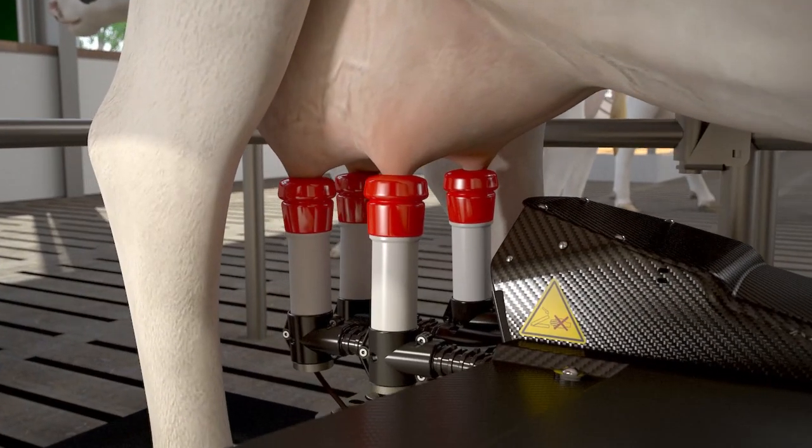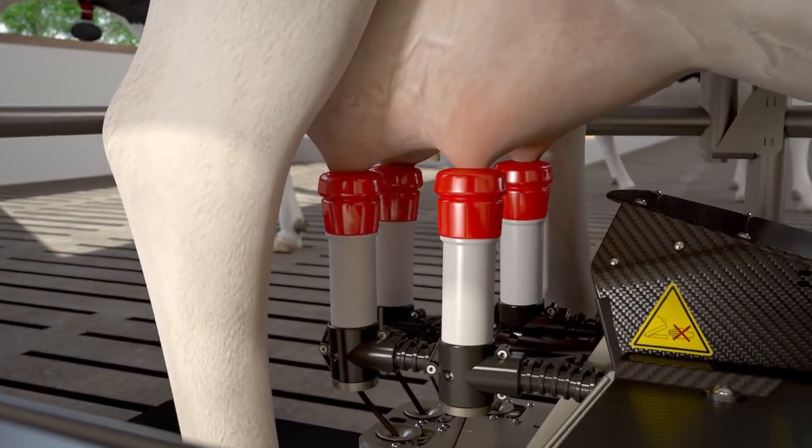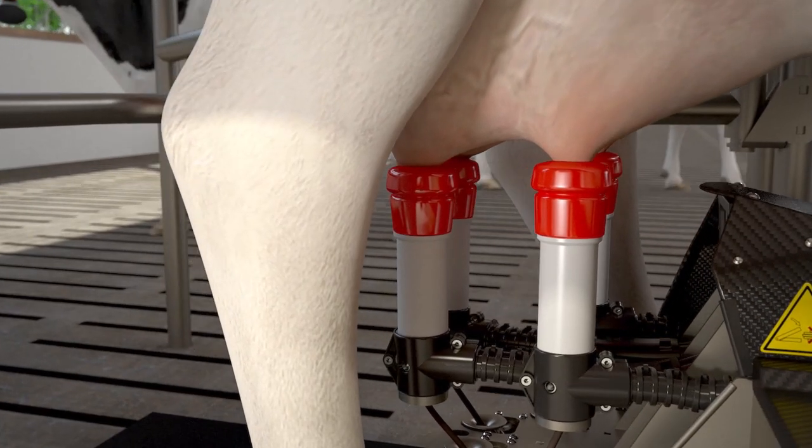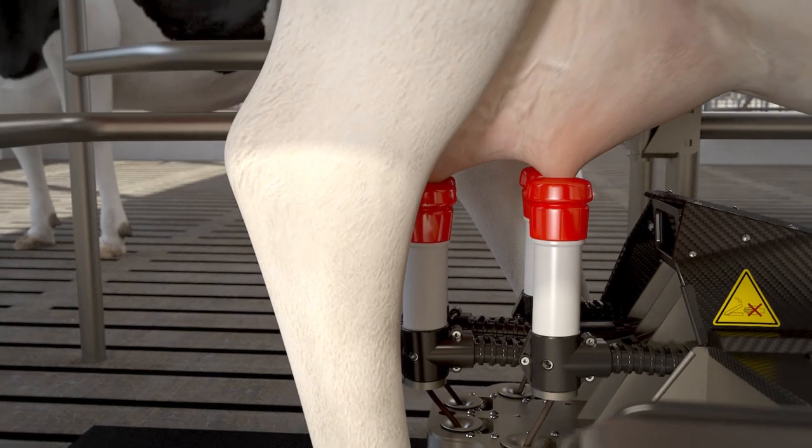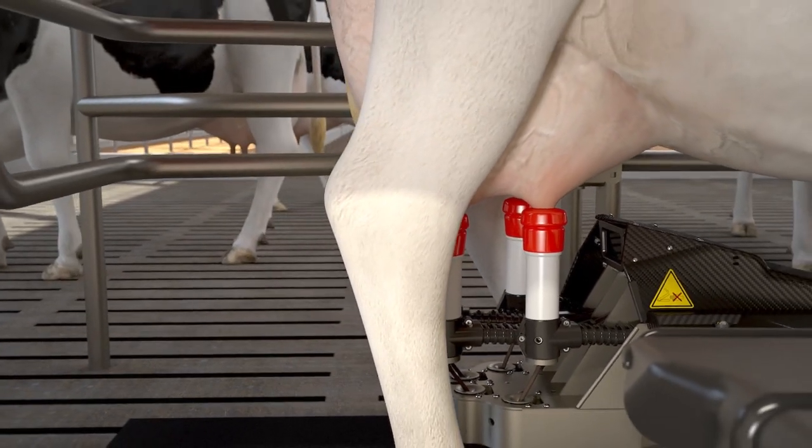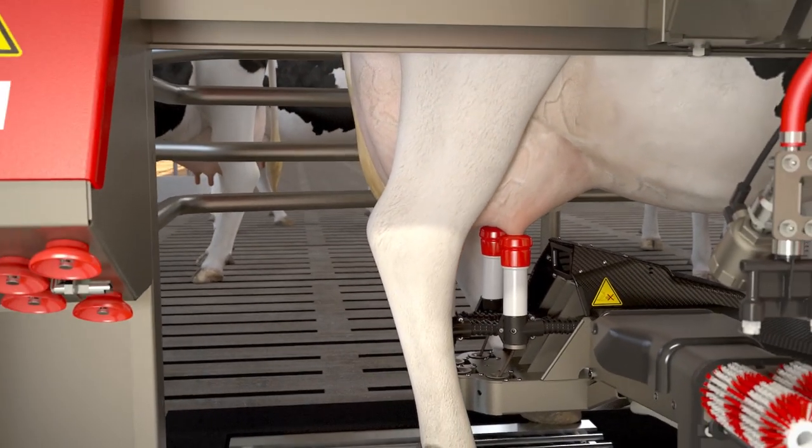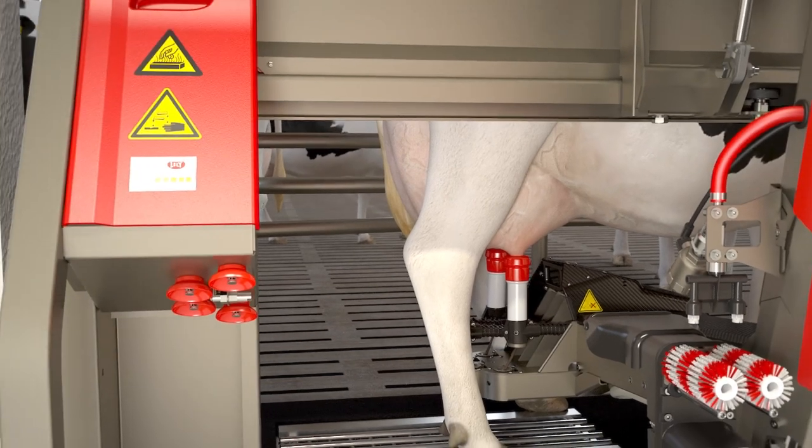Pre-milking will be done by the cup that will also milk the quarter. This eliminates the chance of cross-contamination. In each quarter, there is a small amount of milk of lower quality. During pre-milking, the lower quality milk is extracted from the teat.